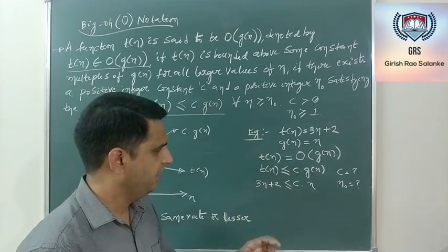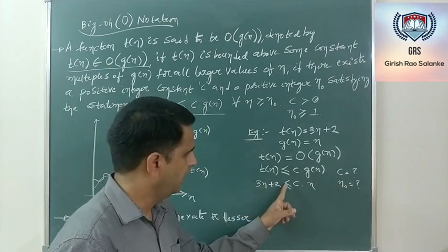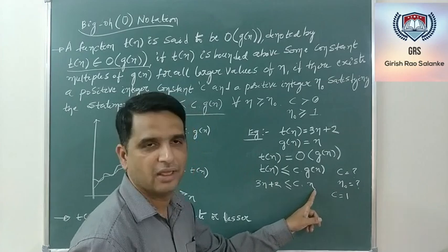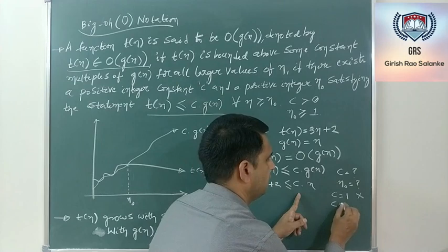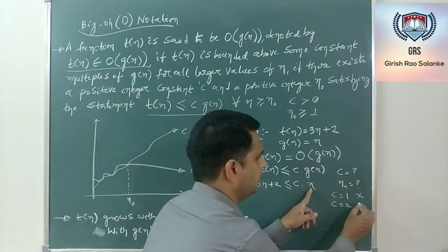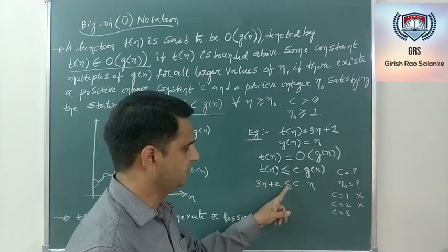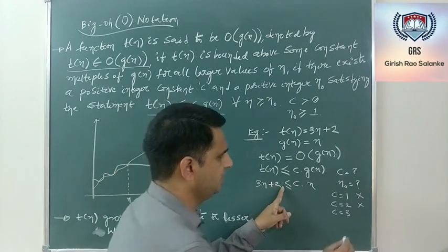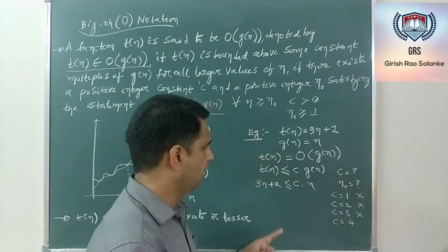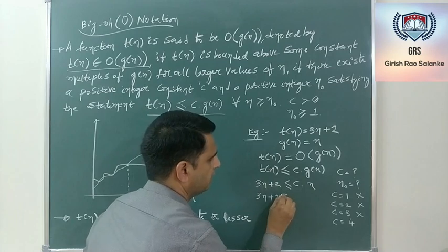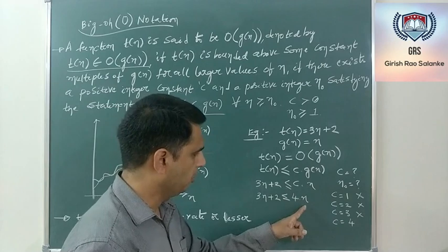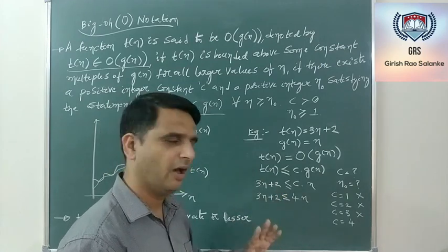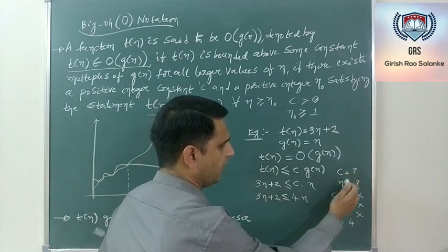If C = 1: 3N + 2 ≤ N is false. If C = 2: 3N + 2 ≤ 2N is also false. If C = 3: 3N + 2 ≤ 3N is false because of the extra +2. If C = 4: 3N + 2 ≤ 4N — since 3N + N = 4N, and 2 is less than N for reasonable N, this holds. So C = 4.